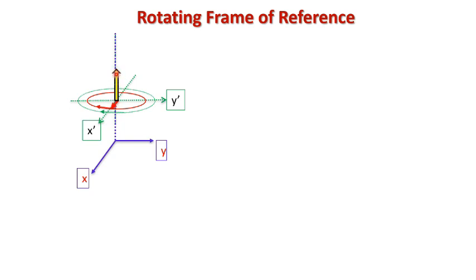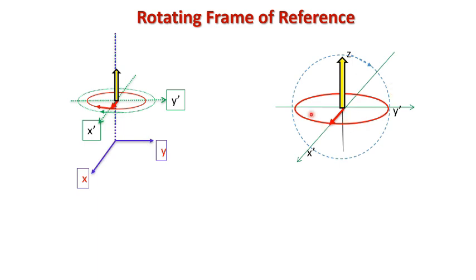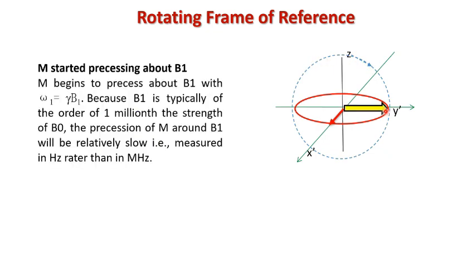Now this magnetization vector no longer feels the B0 field and only experiences the radio frequency radiation. Therefore a force is applied which tilts this magnetization vector towards the B1 field, and in this way this magnetization vector starts precessing in the y-z direction about this B1 field. This is our B1 field, which seems to be static and is applied in the x-direction perpendicular to B0. The magnetization vector starts precessing about this B1 field in the y-z direction, as shown in this animation.